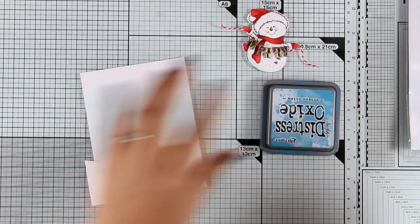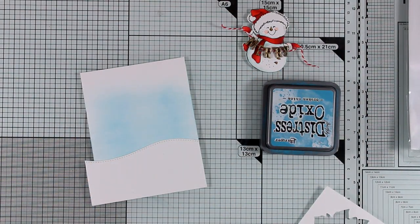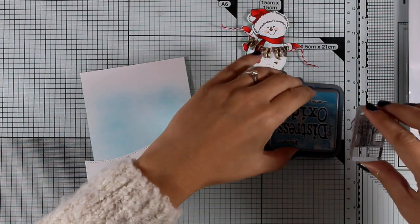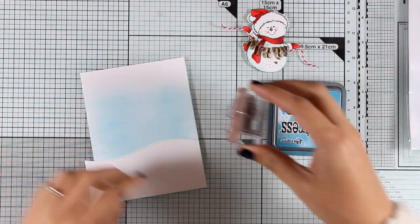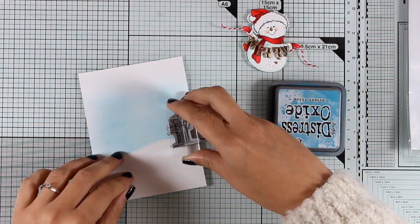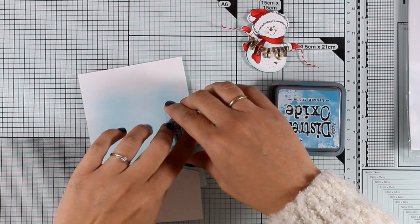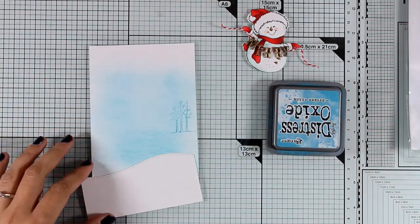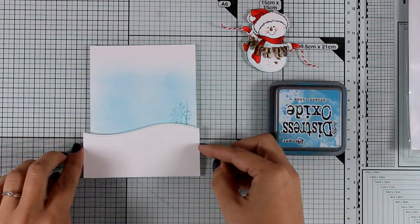I have also cut out a white snowbank using a die, but you can also just use your scissors to create a curve on a piece of white cardstock. On the stamp set with a snowman, there is a bunch of trees which I'm going to stamp with the same ink. By stamping them with blue, they look as if they are very far at the background.